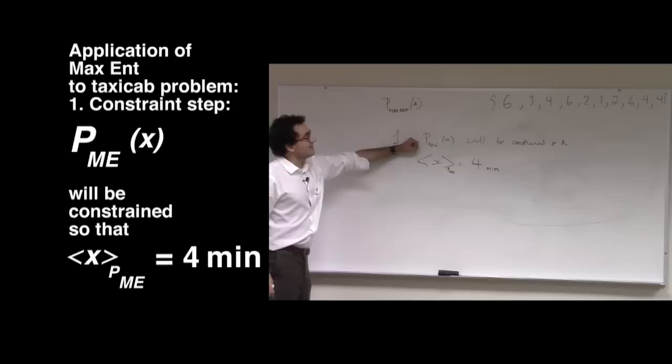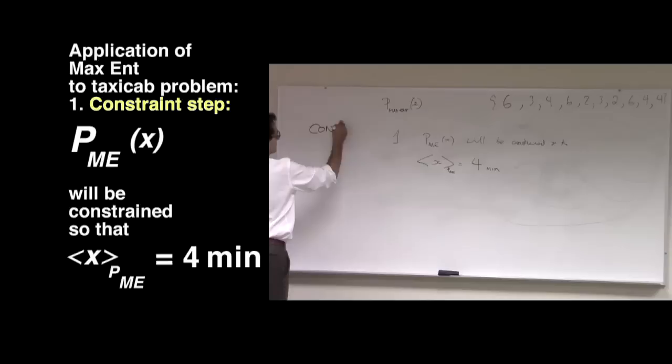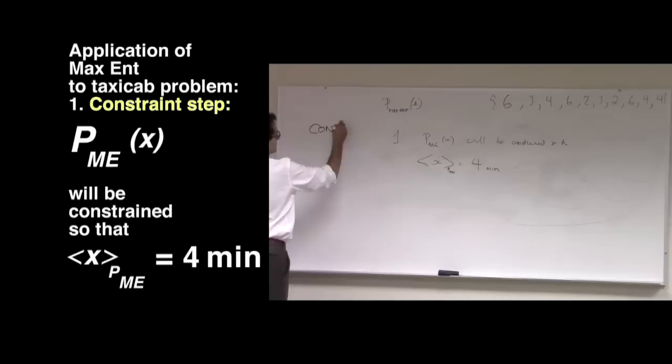And so what we're going to say is, give me probability distributions whose average waiting time is 4 minutes. So that's step 1, this is the constraint step. And so you can see right away that there are many distributions that have an average waiting time of 4 minutes.